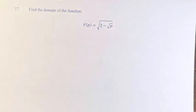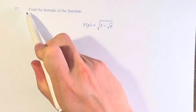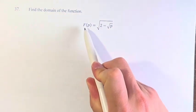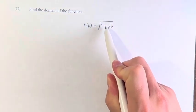Hello, and welcome back to another video. In this problem, we're looking to find the domain of the function f of p is equal to the square root of 2 minus the square root of p.